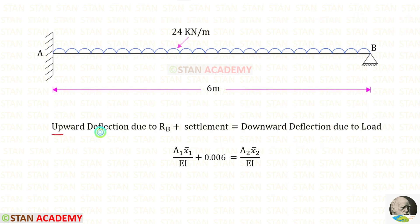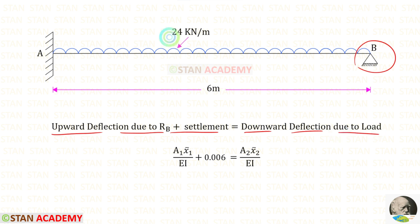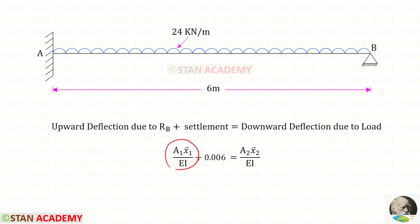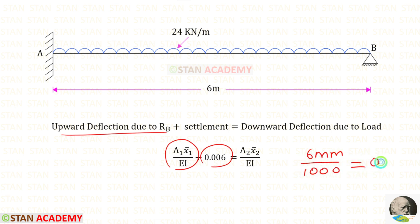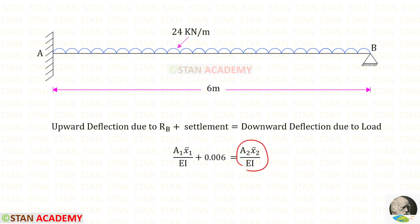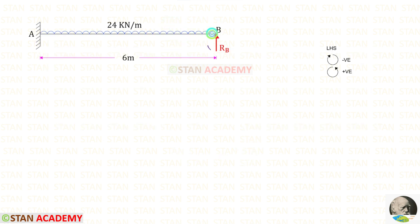In this beam, the upward deflection due to Rb plus the settlement at point B will be equal to the downward deflection due to the load. The settlement is given as 6 millimeters. We can divide that by 1000 so that we get 0.006 meters. This is the downward deflection due to the uniformly distributed load.